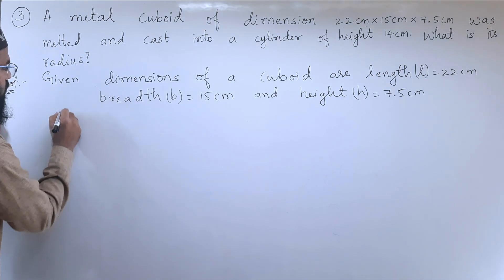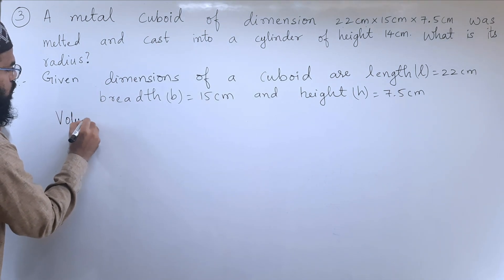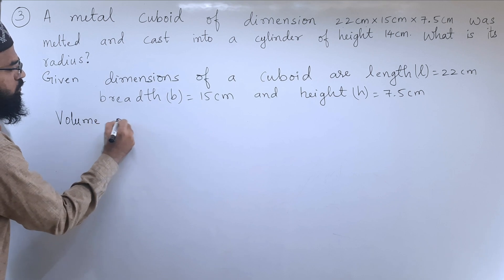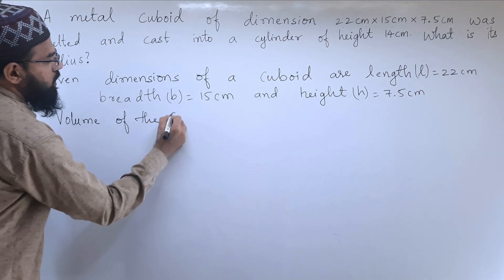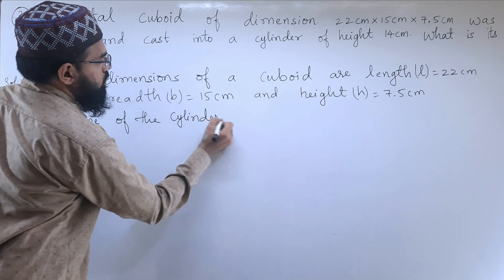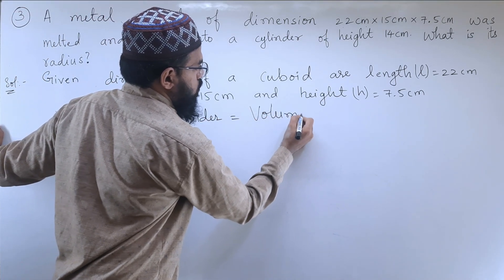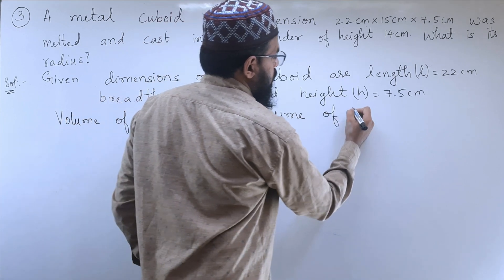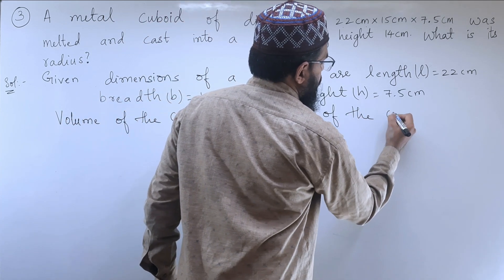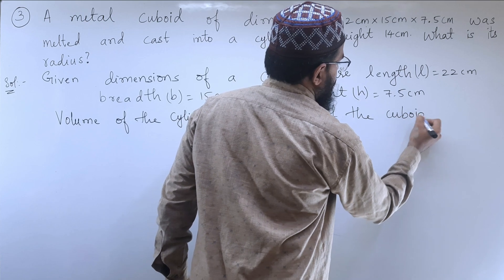We can write volume of the cylinder is equal to volume of the cuboid.